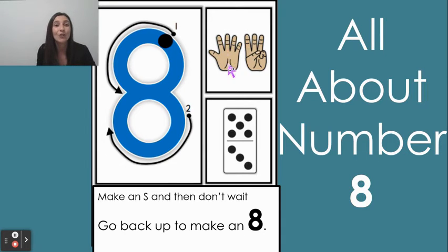Let's count the fingers. 1, 2, 3, 4, 5, 6, 7, 8. What did you notice? You have a whole 5 and then 3 more. Let's count and see if that's true. 1, 2, 3, 4, 5, 6, 7, 8. That is true. We have 5 fingers and 3 more.